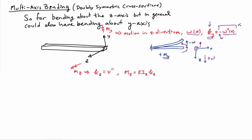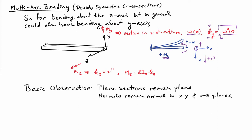So this is the situation when we have moments that can cause bending about two axes — and shear forces would lead to the same result. The basic observation when bending a beam about two axes is that plane sections still remain plane, and normals in the x-y plane and in the x-z plane also remain normal. Our basic kinematic assumptions are the same, but the motion is more complicated: we don't just have rotation of the cross-section about the z-axis, but simultaneous rotation about the y-axis as well.